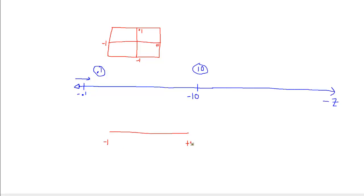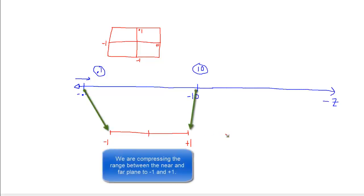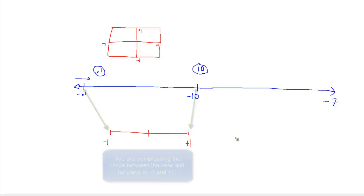That's positive 1, negative 1 to positive 1 in z, and here's 0. Anything past positive 1 we don't render — all the fragments with a depth value greater than 1 are not rendered. Anything less than negative 1 is right in our eye or behind our head, so we don't want to render that either.